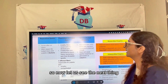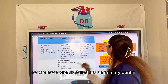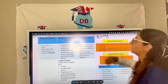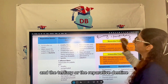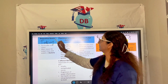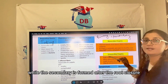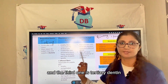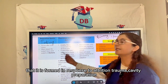There are three types of dentine: primary dentine, secondary dentine, and tertiary or reparative dentine. Primary dentine is formed before the root closes, while secondary dentine is formed after root closure. Tertiary or reparative dentine is formed in response to attrition, trauma, or cavity preparation.